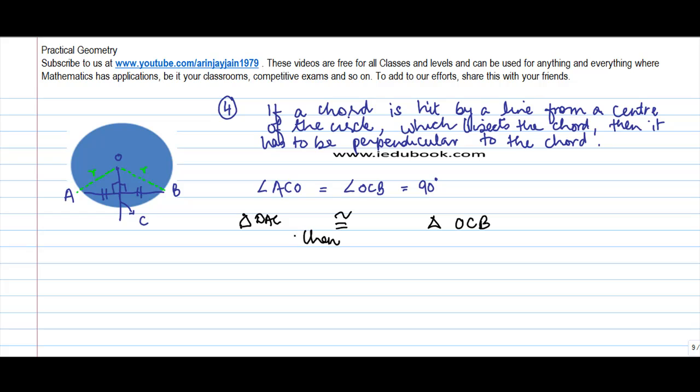then angle ACO will be equal to angle OCB. But what we know is that AB is a straight line. Hence, this complete angle is equal to 180 degrees, or angle ACO plus angle OCB is equal to 180 degrees. Let's mark this as point number one.